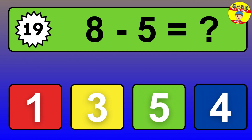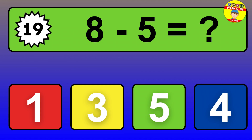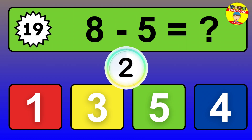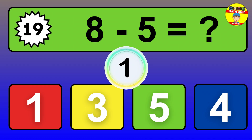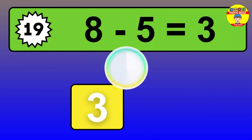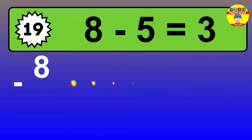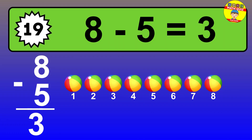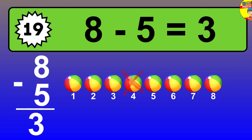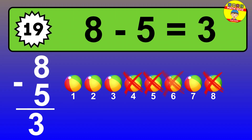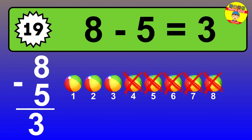Question 19. 8 minus 5 equals what? So the answer is 8 minus 5 is 3. Let's count it. 1, 2, 3.